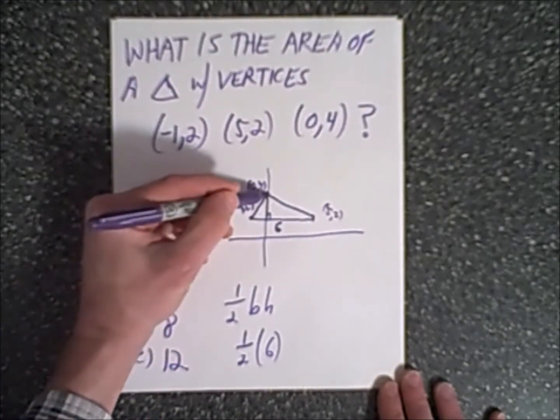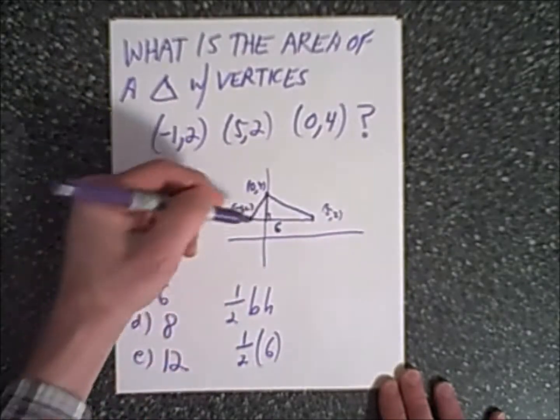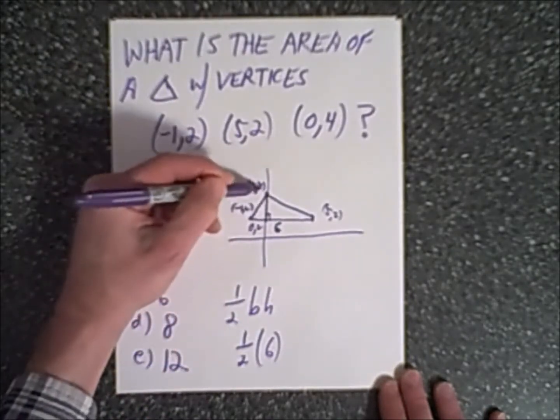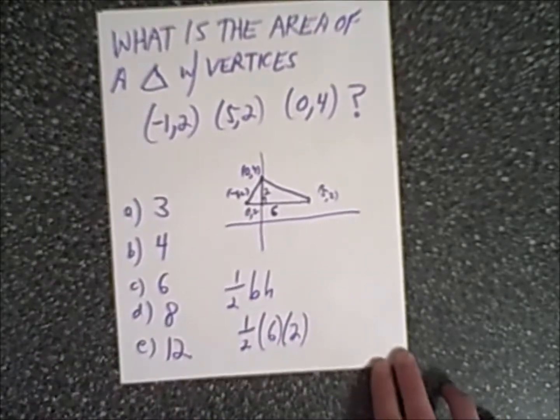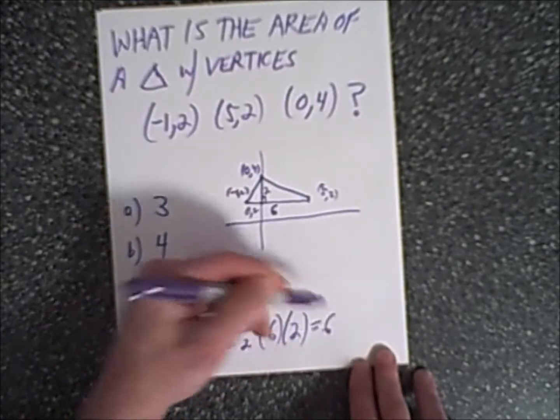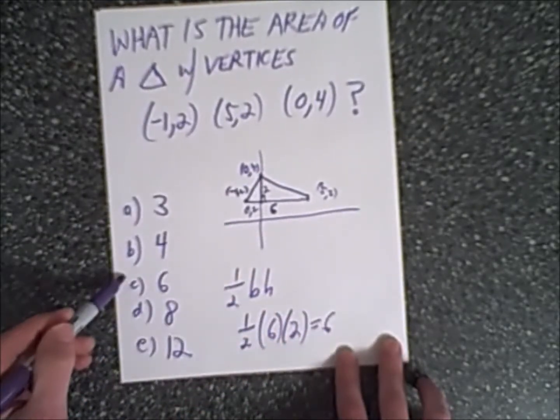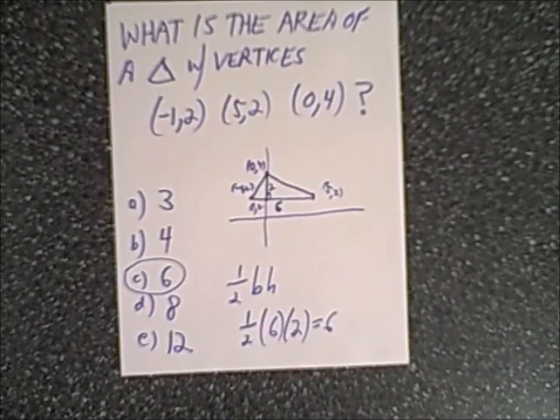The height would be from 0, 4, and what's this point? Since it's on the horizontal line, this point is 0, 2, which means it's got a height of 2 units. Let's fill in 2 units for our height. Our formula is one half, 6 times 2, which equals 6. Therefore our answer is C, 6 square units.